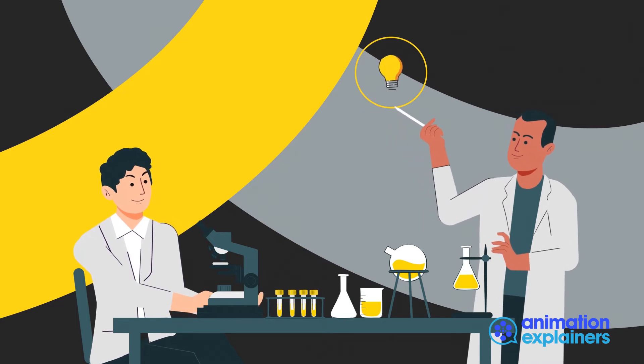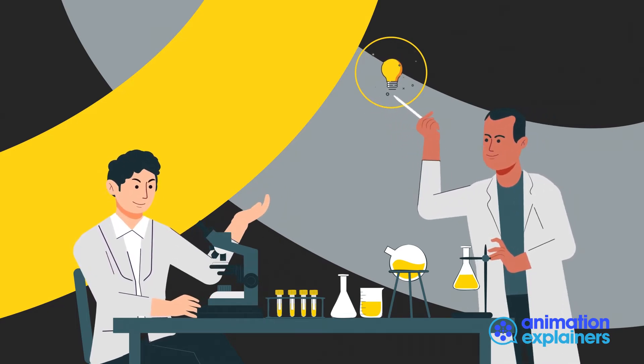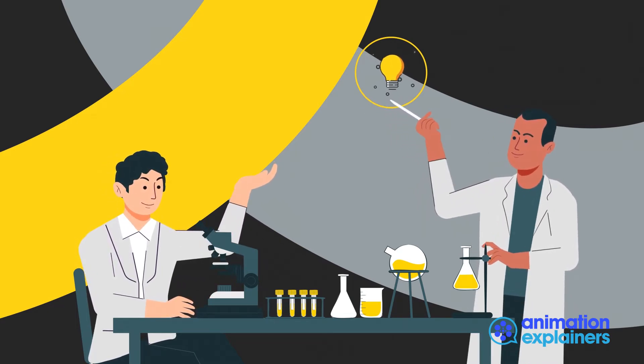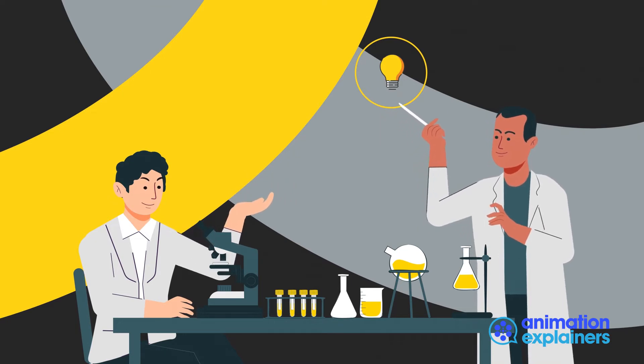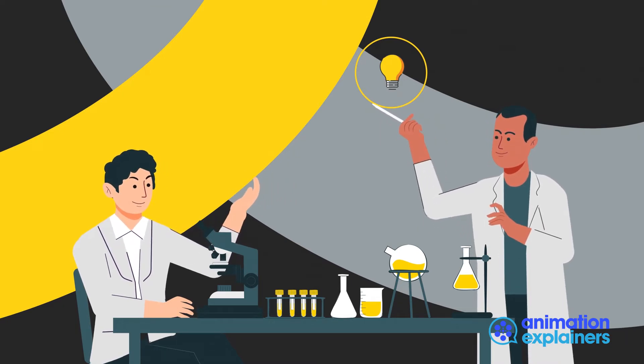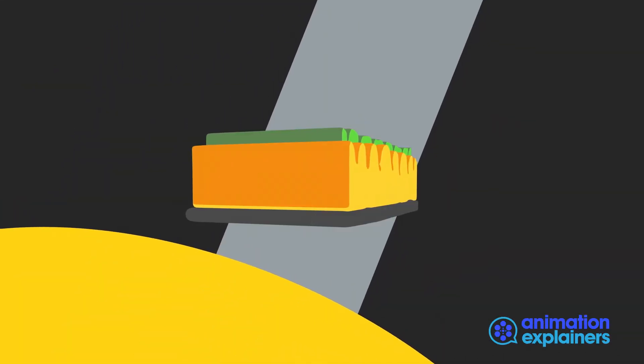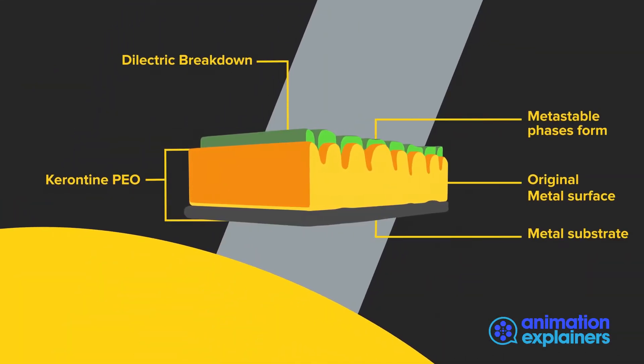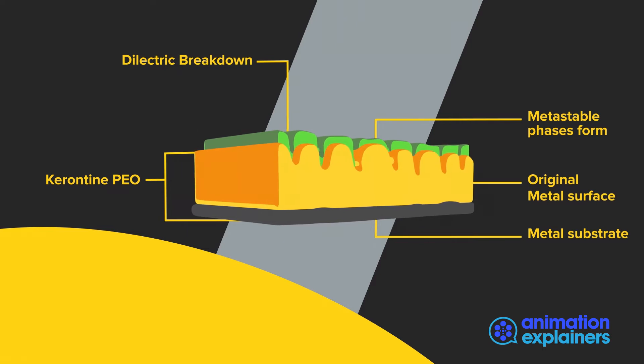Collaboration and a mutual understanding of challenges yield the best results. Keronite takes the time to understand your requirements to design a transformative coating specific to your application, using PEO to convert the surface of light alloys into corrosion and wear-resistant ceramic layers.